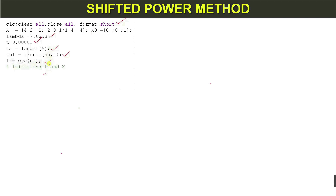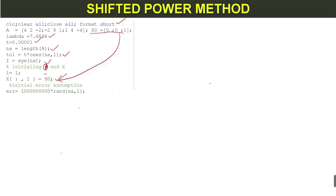Next I generate an identity matrix of the same size as matrix A. Then I initialize variables: k, i, and x. When i equals 1, we have the given starting vector x-naught. After that we set the initial error assumption in the solution.